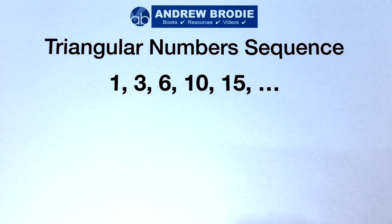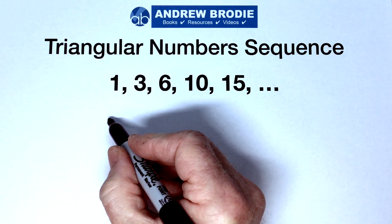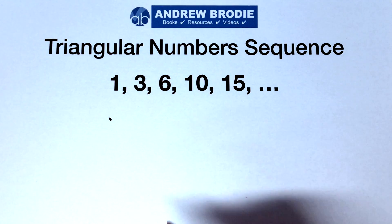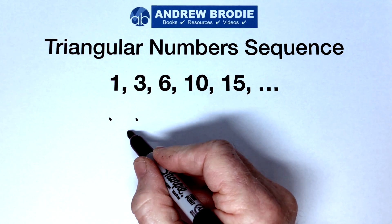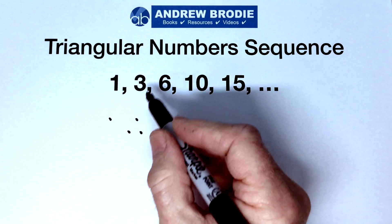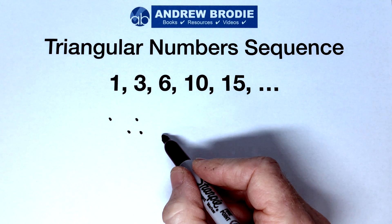This is the triangular numbers sequence. 1 can be shown by a dot. 3 — there are 2 extra dots, giving us 3. Then 6, and so on up to 10.